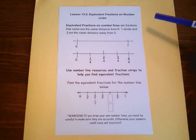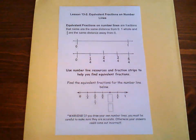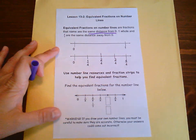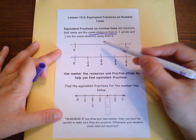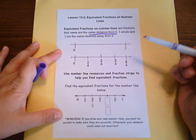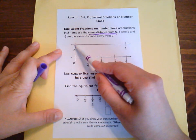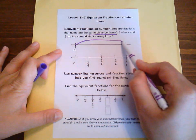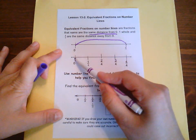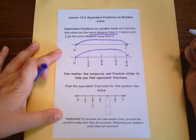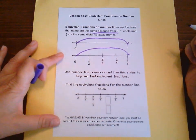Equivalent fractions on number lines are fractions that name the same distance from zero. One whole and four fourths are the same exact distance away from zero, and therefore they are equal. So zero to one is this far, and zero to four fourths is the same exact distance. And since they're the same distance from zero, they are the same size.